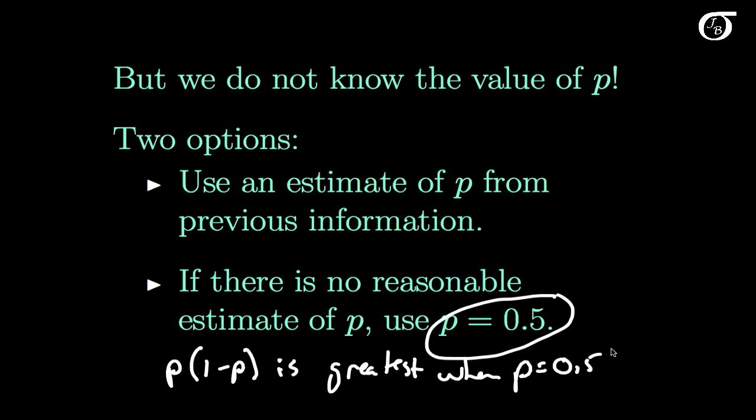But this quantity in the formula is going to be greatest when P is equal to 0.5. This choice of P is a conservative or worst case approach. And it ensures that we have a large enough sample size that we're not actually underestimating the required sample size.